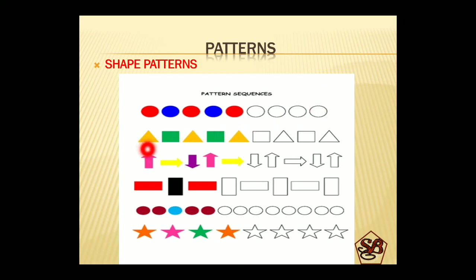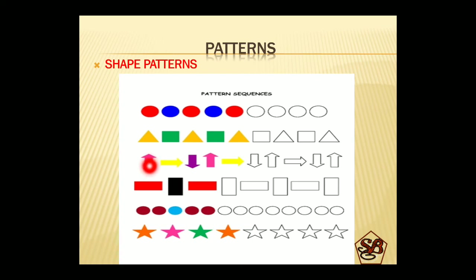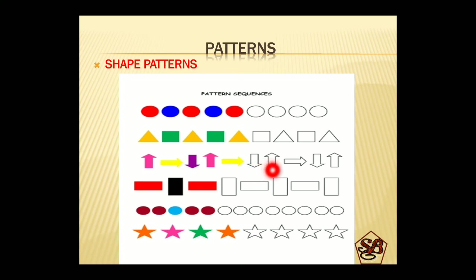Here: yellow triangle, green rectangle, yellow triangle, green rectangle, yellow triangle — so next should be green, then yellow, then green, then yellow. Now: upward arrow, right arrow, down arrow, up arrow, right arrow, down arrow — following the color sequence also, down is supposed to be purple, up is supposed to be pink, and right is yellow.